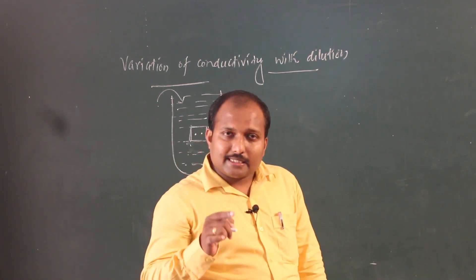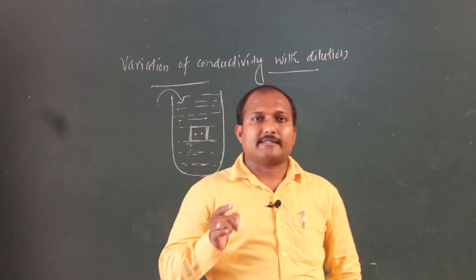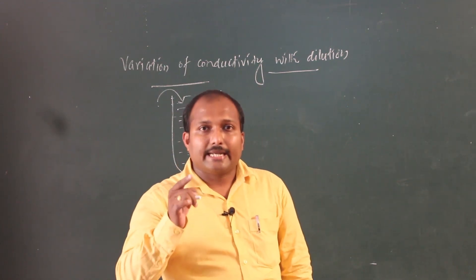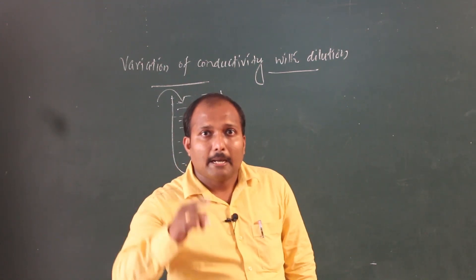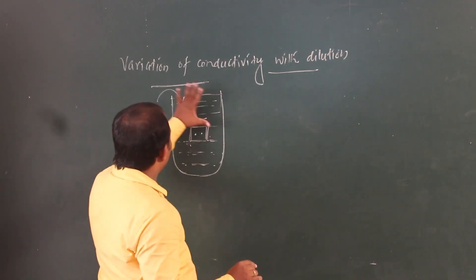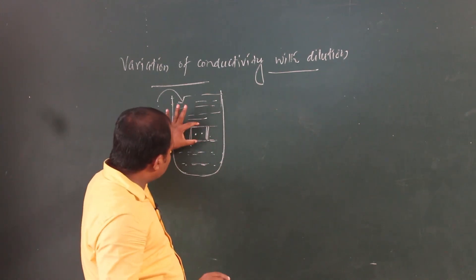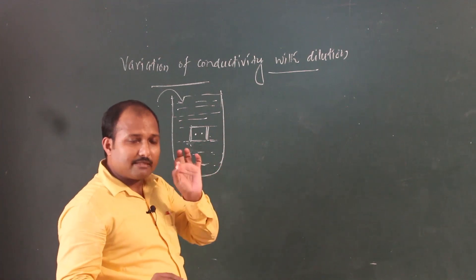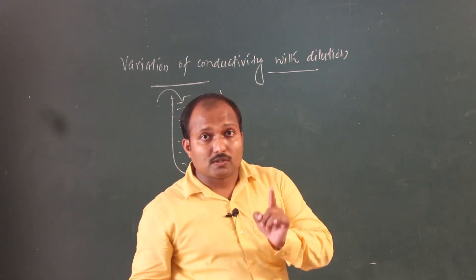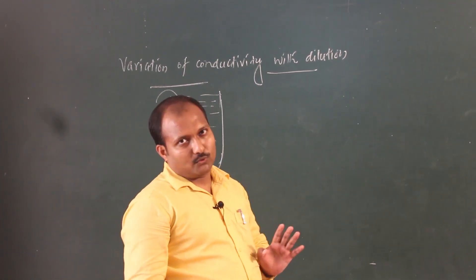Conductivity decreases with dilution. Specific conductance decreases with increase in dilution because of the decrease in the number of ions per centimeter cube of the solution. The total number of ions may not change, but within one centimeter cube, the number of ions decreases.